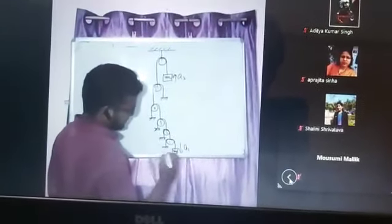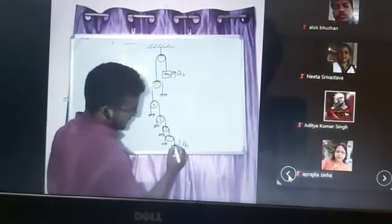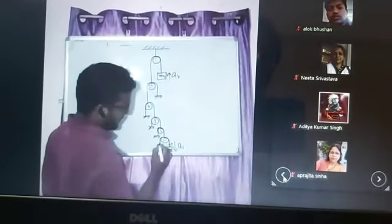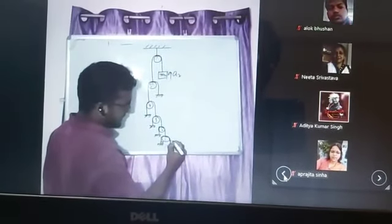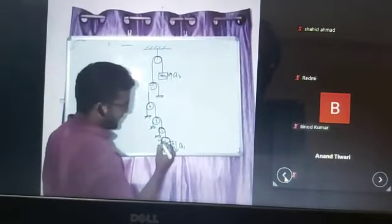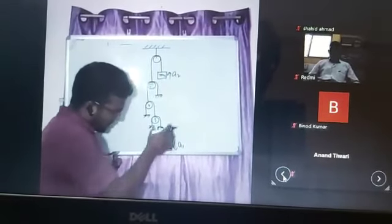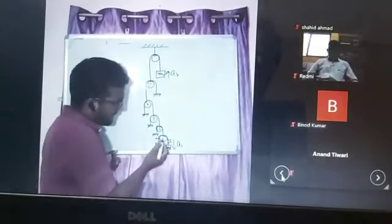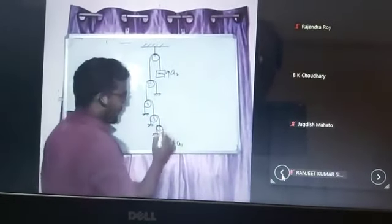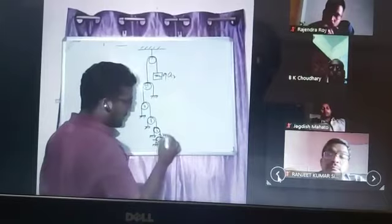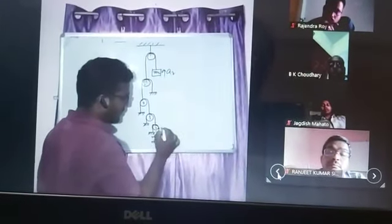Now here, tension in this string will be T, here also will be T. Now in opposite direction here will be T, here will be T. Now, the downward direction total tension on pulley one is 2T. So to balance it in upward, it will be 2T. Here also will be 2T.